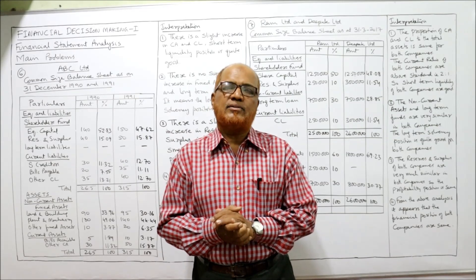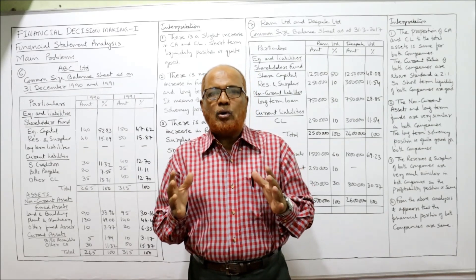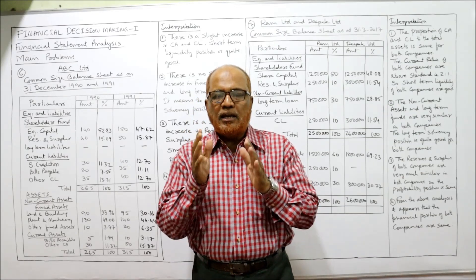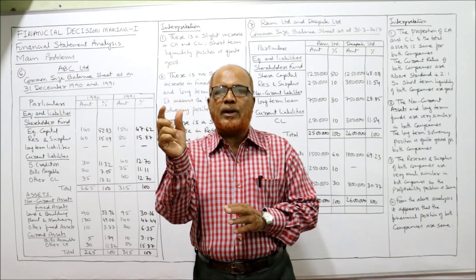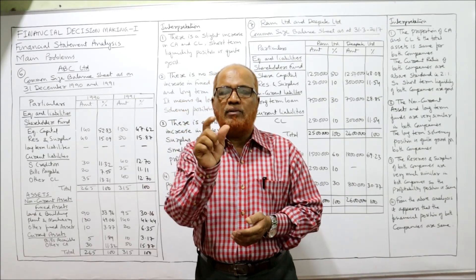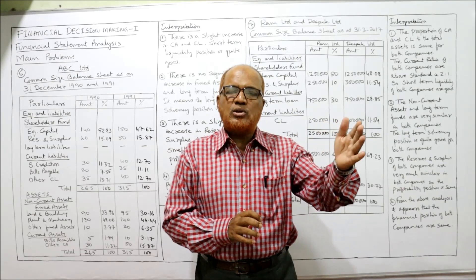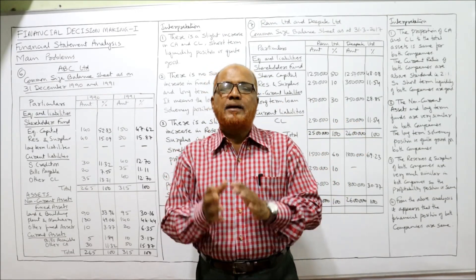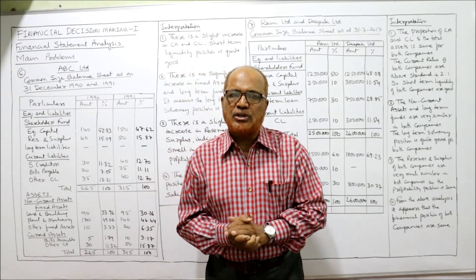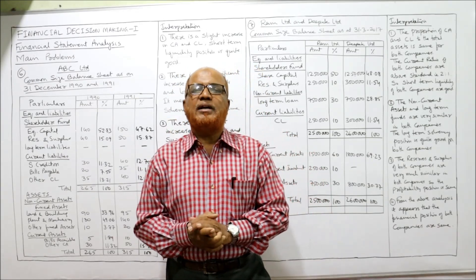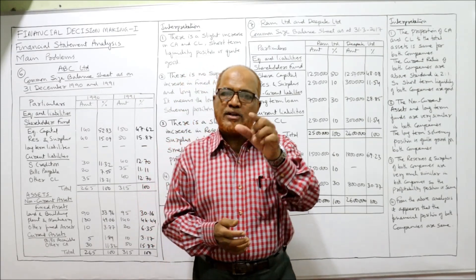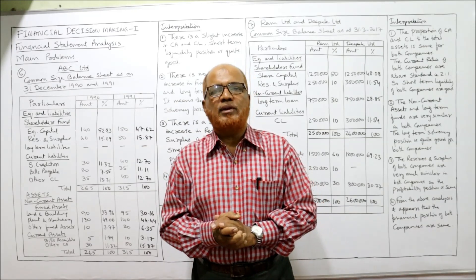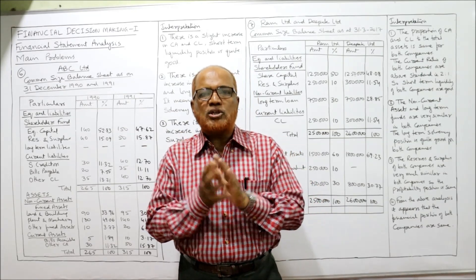Next video will start the next topic — comparative statement. As you already know, in common size statement we take one item as base. In income statement, we take revenue from operations as the base and that will be taken as 100%. All other values will be calculated as a percentage of base. Similarly, in common size balance sheet, the total of assets will be taken as 100% and all other items expressed as a percentage of total assets.